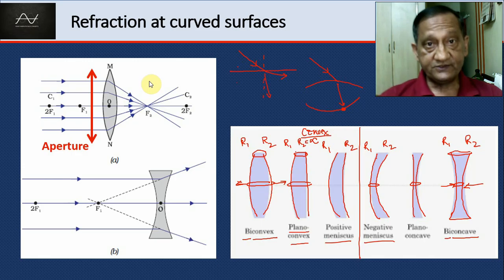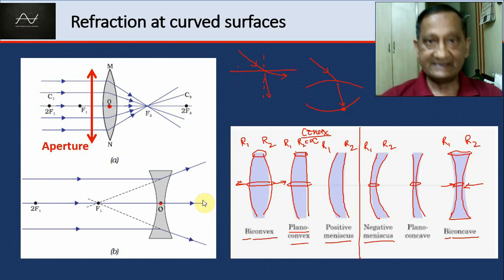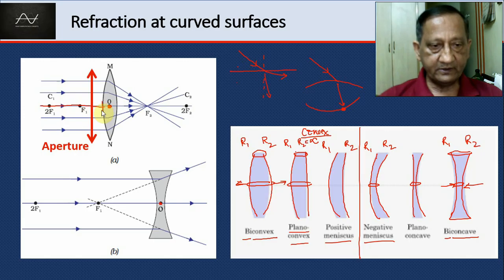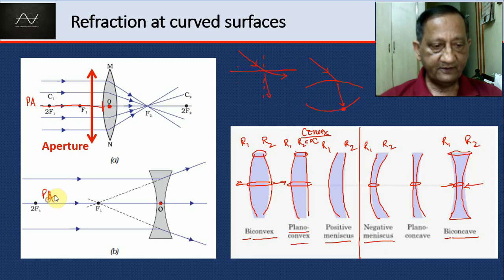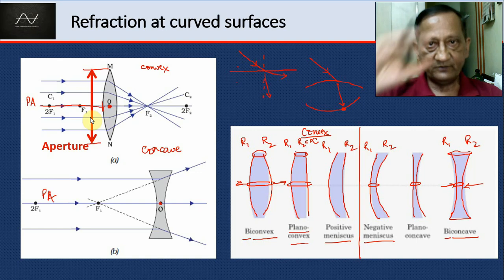Let's study some terms first before we go forward in terms of image formation by a lens. The geometrical center of a lens is called the optical center O. The line passing through the optical center and perpendicular to the surface is called the principal axis, just as in the case of a mirror. This distance from top to bottom is called the aperture — how big that opening is.